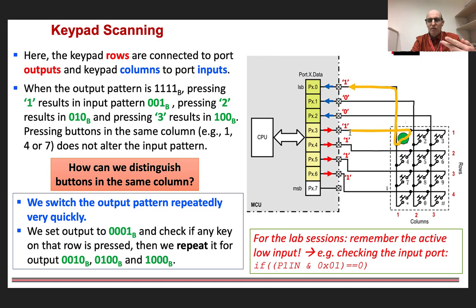So instead of outputting 1, 1, 1, 1 on our rows, we output 0, 0, 0, 1, and we check, then we output 0, 0, 1, 0, and we check, then we output 0, 1, 0, 0, we check, then we output 1, 0, 0, 0, and we check, and then we repeat back again in sequence.